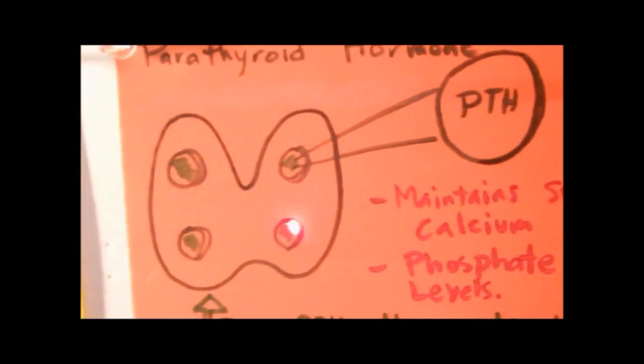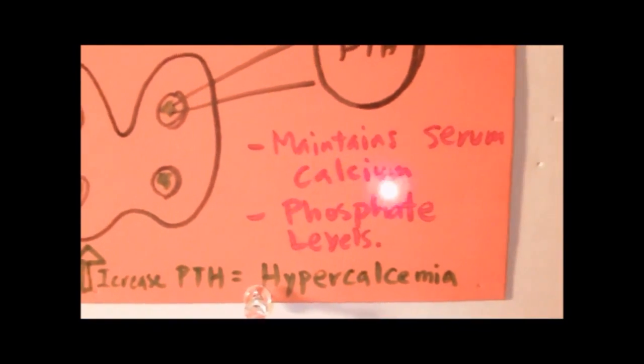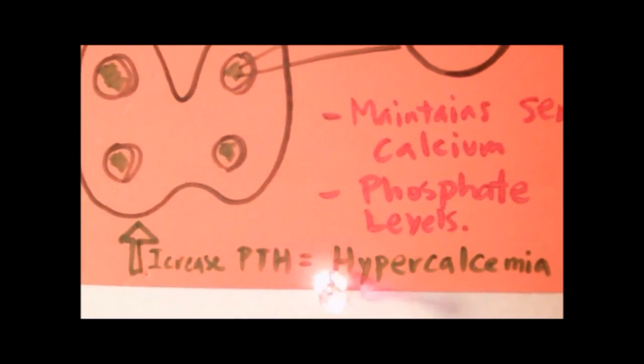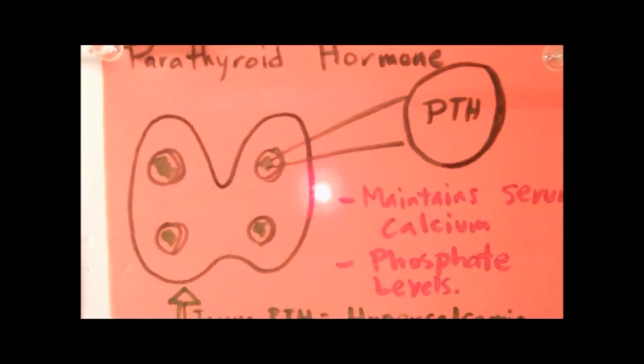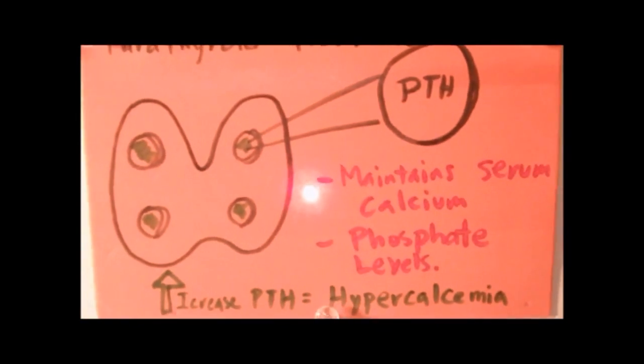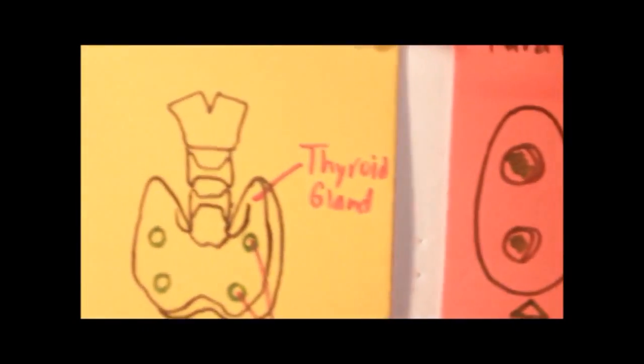Well, since the parathyroid hormone is responsible for calcium absorption, then an increase in the PTH or the parathyroid hormone would mean elevated serum calcium levels, and that means hypercalcemia. And with an excess of calcium in the body, it can lead to kidney stones and kidney stones can eventually lead to renal failure.